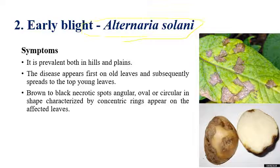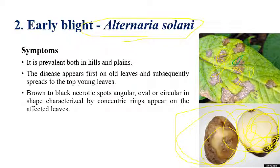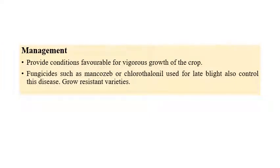The next disease is early blight, caused by Alternaria solani. The main difference is that early blight occurs earlier than late blight. Early blight can be observed in both hill regions and plain regions. Initial symptoms occur on older leaves and spread subsequently to younger leaves. Concentric rings can be seen on the margins of leaves and also on tubers. Fungicides like Mancozeb and Chlorothalonil are recommended, and resistant varieties are also available.